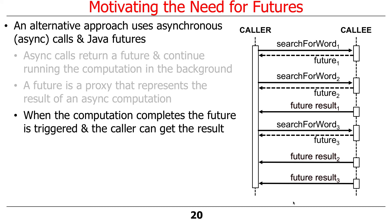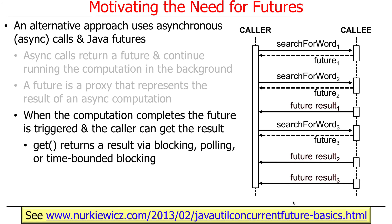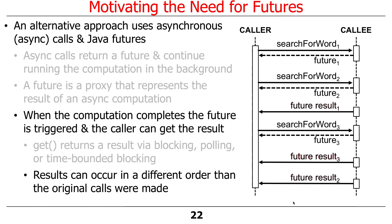The get method is defined on a future and returns a result. You can either block waiting on it, poll it, or do a timed bounded blocking call. These are the ways you retrieve results from a future in classic Java. One important thing to remember is that results can come back in a different order than the calls were originally made.